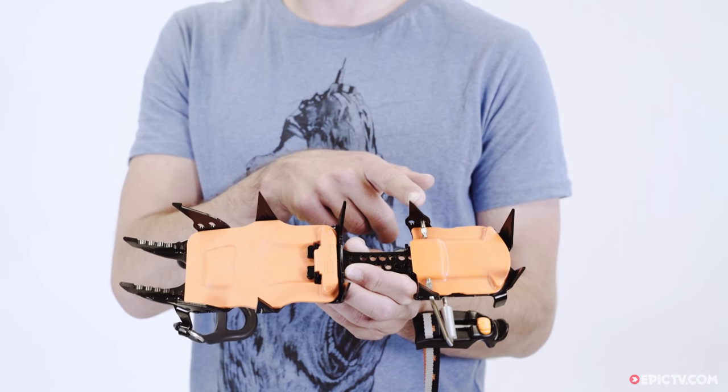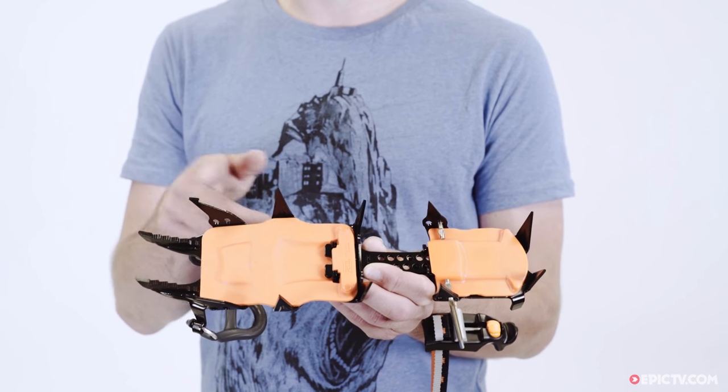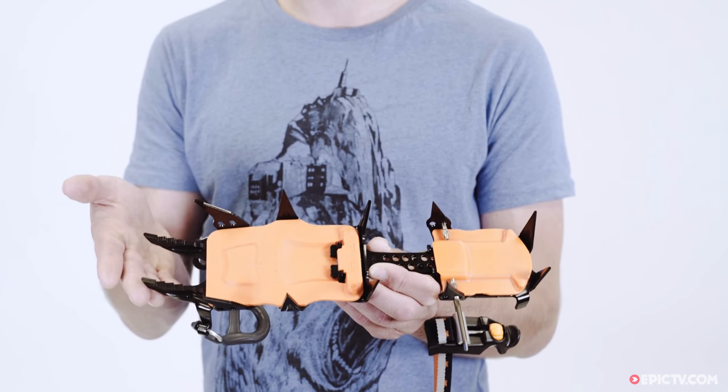It has 12 crampon points, each one designed to increase stability when going up and downhill.